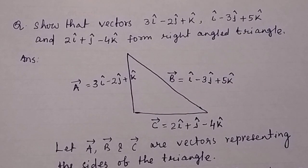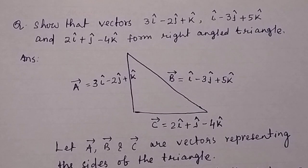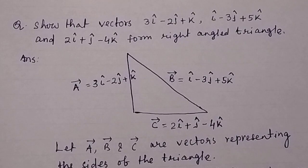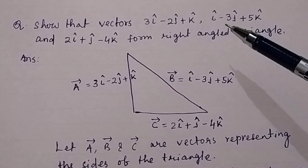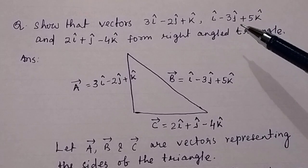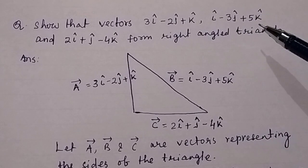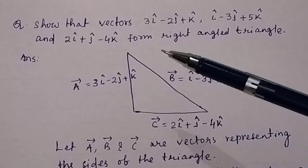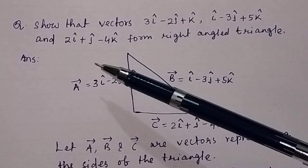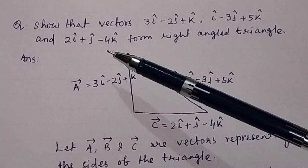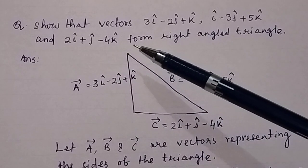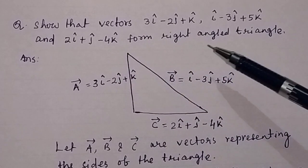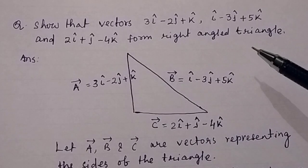Vectors 3i-cap minus 2j-cap plus k-cap, i-cap minus 3j-cap plus 5k-cap, and 2i-cap plus j-cap minus 4k-cap form a right angle triangle.